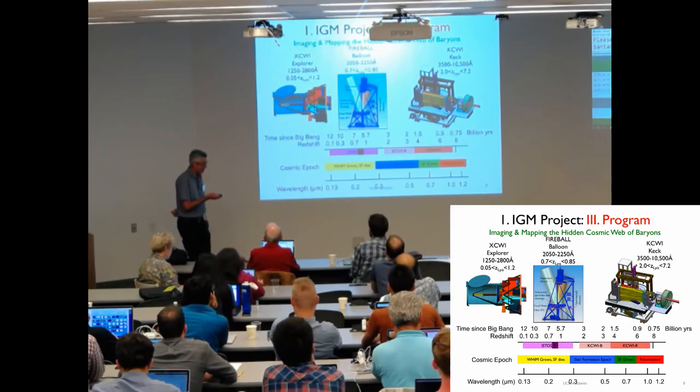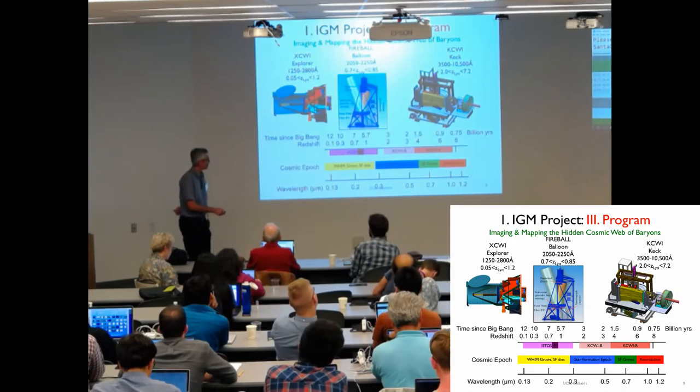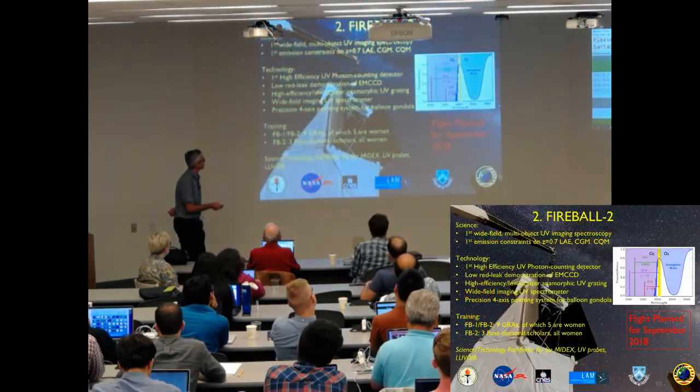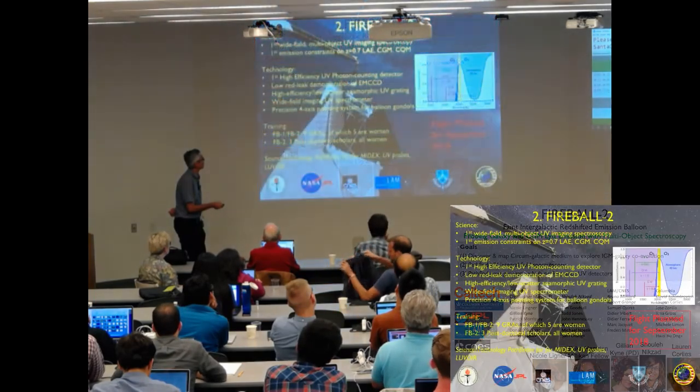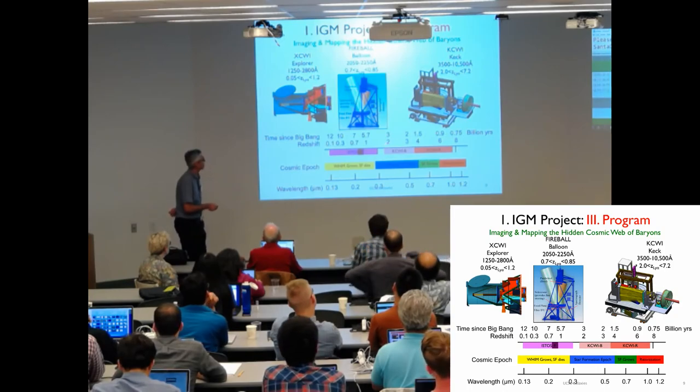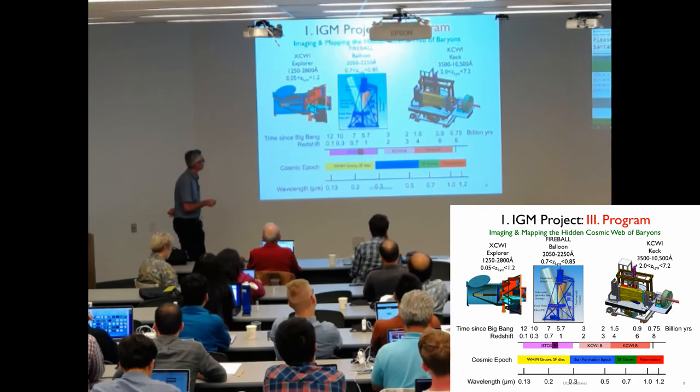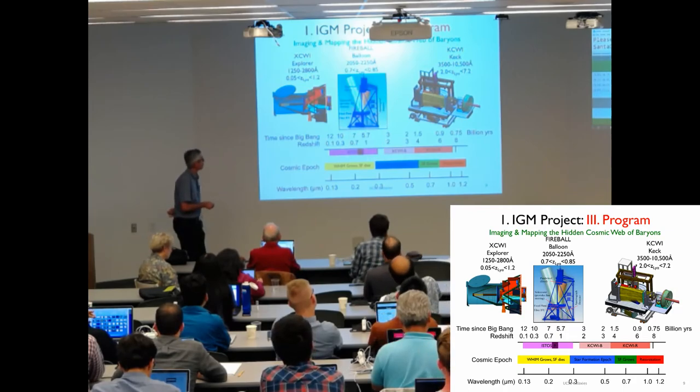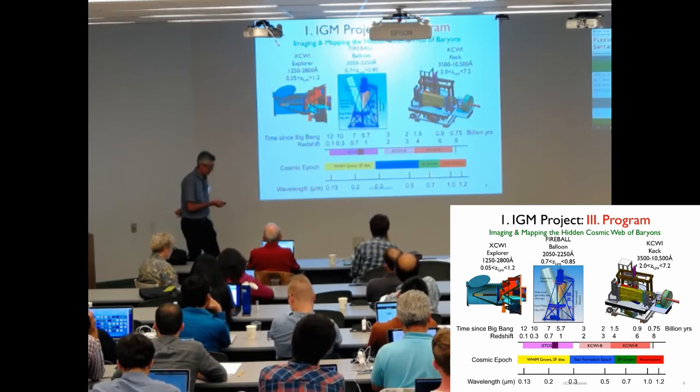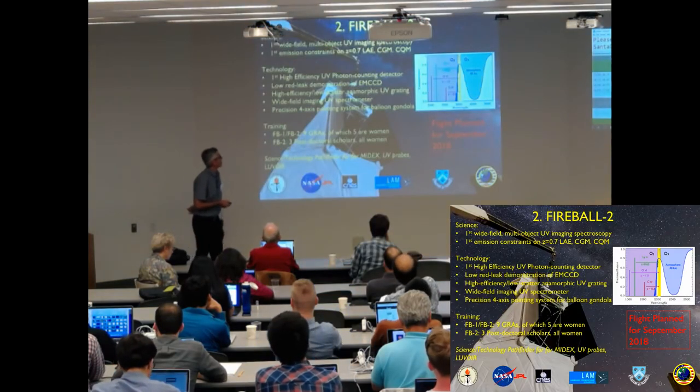As far as our instrumental or experimental program, we explore everywhere, everything from the epoch of reionization with the red channel of KCWI, which is under construction, blue channel's commissioned. And then, we have a balloon to do redshift 0.7 Lyman-alpha. Ultimately, we hope that's an explorer, which will cover the redshift 0 to 1.5 range of Lyman-alpha.